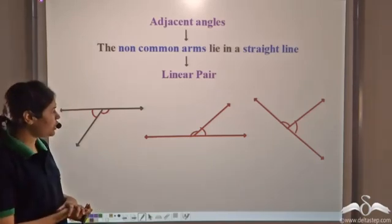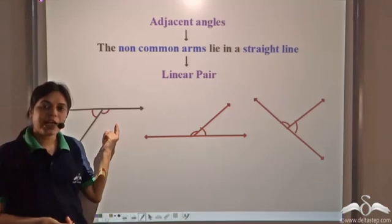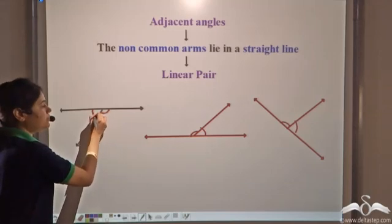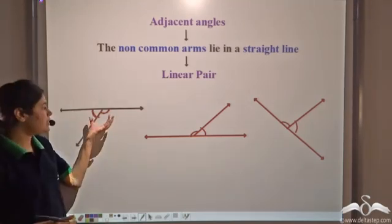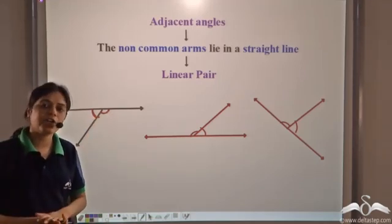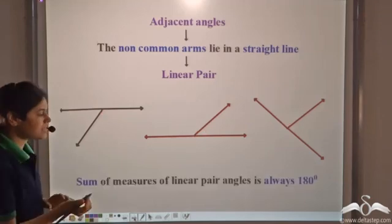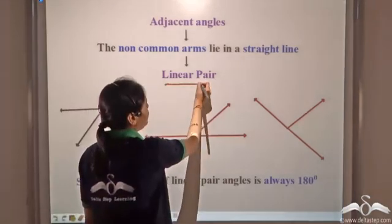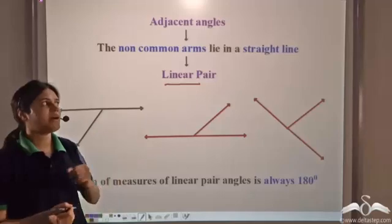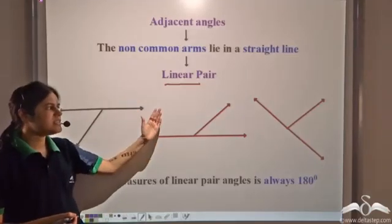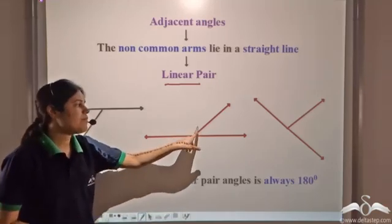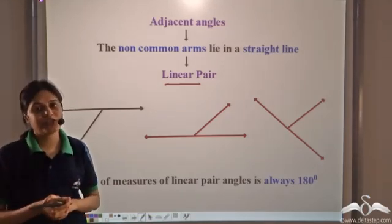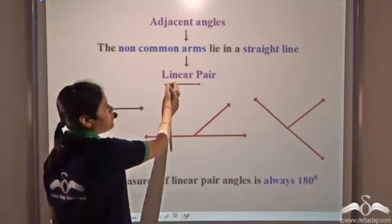Recall that an angle on a straight line is equal to 180 degrees. So the two angles together constitute an angle on a straight line, meaning their sum is 180 degrees. We can say that the sum of measures of a linear pair of angles is always 180 degrees. Alternatively, if the sum of two adjacent angles is 180 degrees, then they form a linear pair.